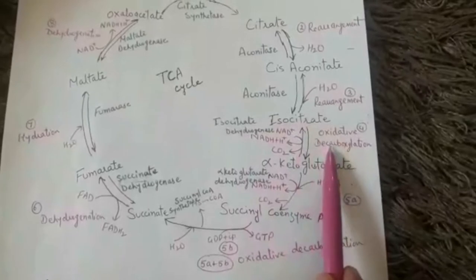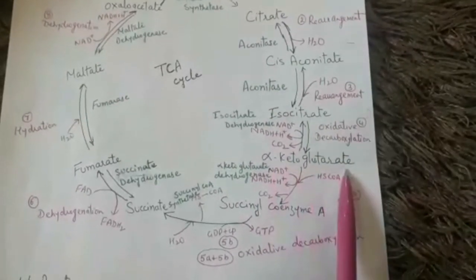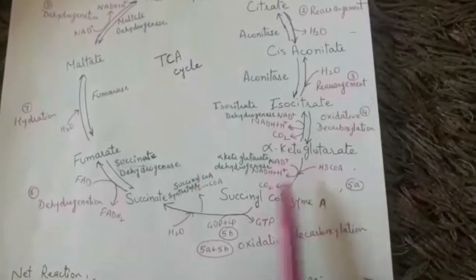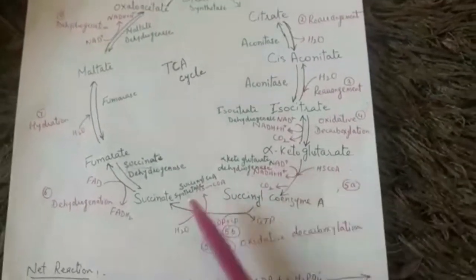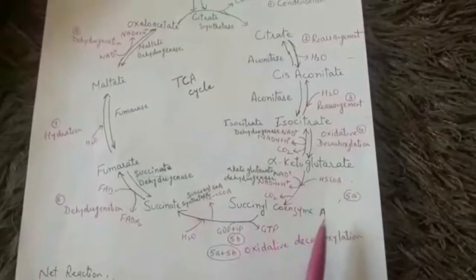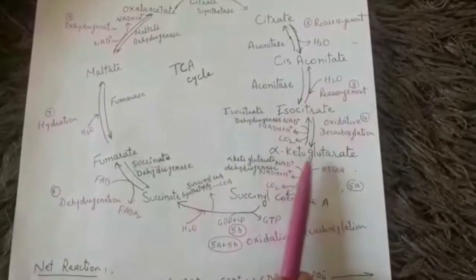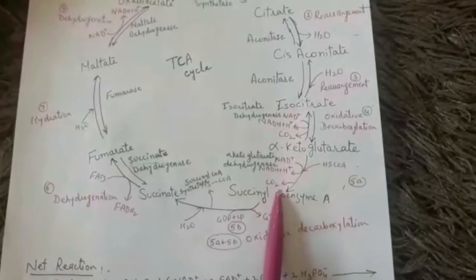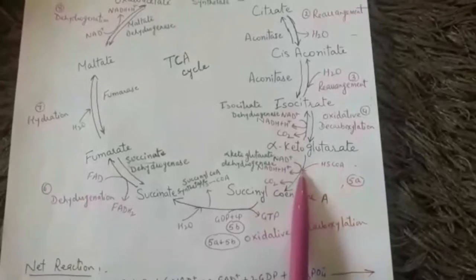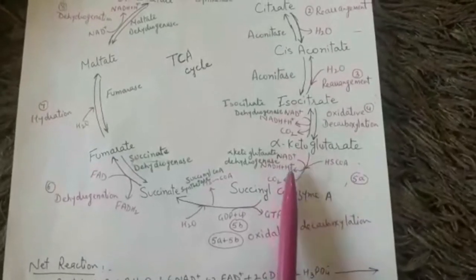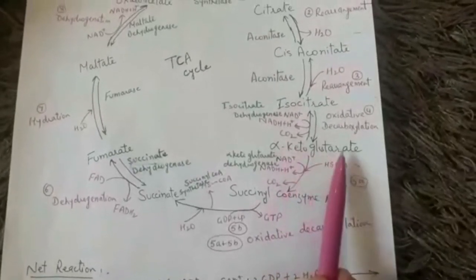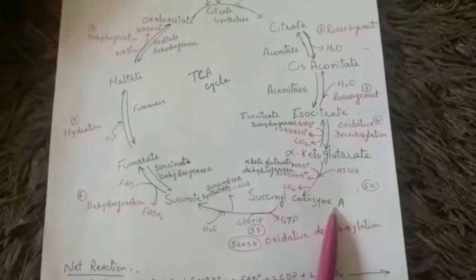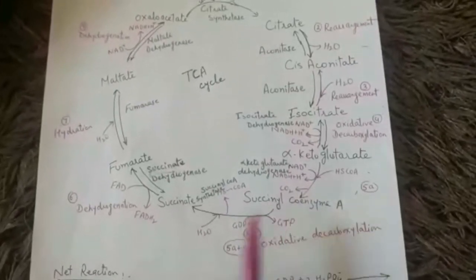Isocitrate undergoes oxidative decarboxylation to form alpha-ketoglutarate. The next step is again oxidative decarboxylation, but it is slightly more complicated as it is completed in two sub-steps. Alpha-ketoglutarate loses carbon dioxide and a pair of hydrogen atoms, and coenzyme A participates. As a result, alpha-ketoglutarate changes into a succinyl group, which condenses with coenzyme A to form succinyl coenzyme A.